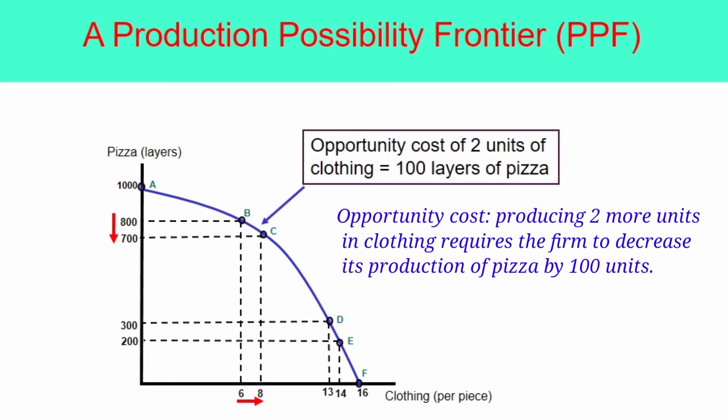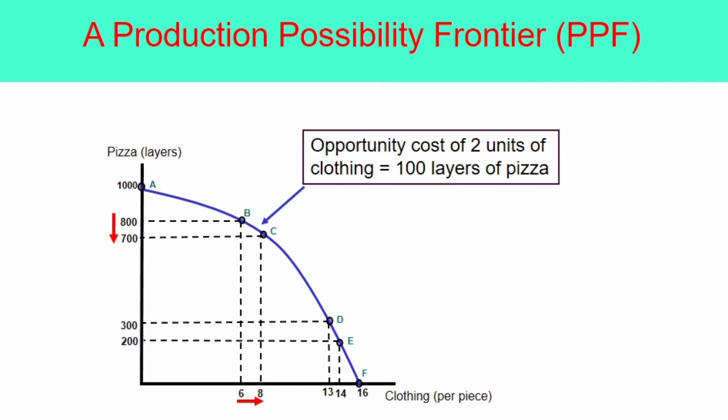How about the opportunity costs between point D and point E? From point D to point E, the production of pizza decreases by 100 units. As firm increases its production of clothing by 1 unit. In other words, the production of clothing will increase only if firm will decrease its production of pizza. Or, the only way for the firm to increase the production of pizza is by decreasing the production of clothing. This means that the opportunity cost of clothing is this one.